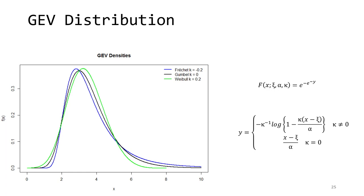The generalized extreme value distribution changes its shape according to its third parameter, kappa. This shape parameter allows it to become each of the three types of extreme value distribution. When kappa is exactly equal to zero, the GEV distribution becomes the Gumbel distribution. When it's negative, it becomes the Fréchet distribution. The Weibull distribution results from a positive kappa. Sometimes in the literature you'll see the opposite convention with a slightly different density function — the convention shown here is used most frequently in precipitation frequency analysis.